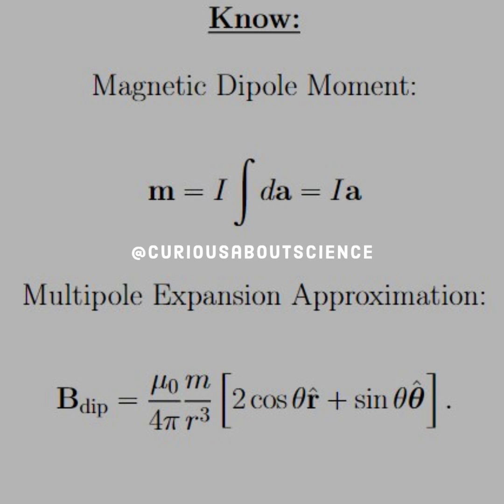Alright, so what we need to know is how they define the magnetic dipole moment M equals I integral over the surface area which equals Ia where A is defined as the vector area so that could switch based on geometry. Be mindful of that.